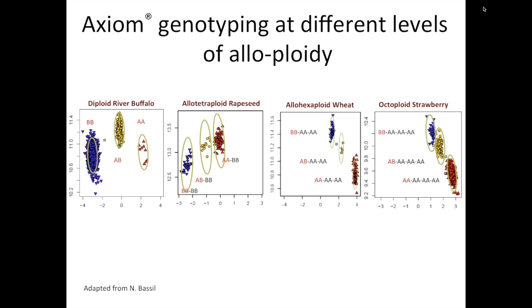This is an example of Axiom SNP allele calling for different levels of allopolyploid for arrays that have been developed by Affy. On the left, you can see SNP clustering for diploid river buffalo, allotetraploid rapeseed, and further to the right, allohexaploid wheat, and then finally octoploid strawberry.